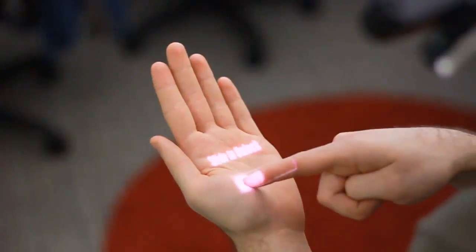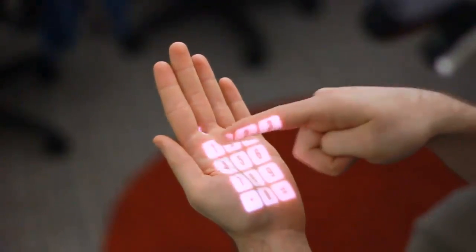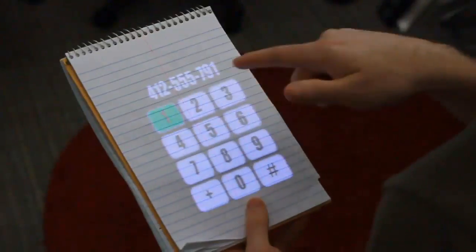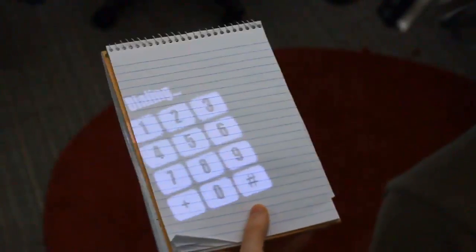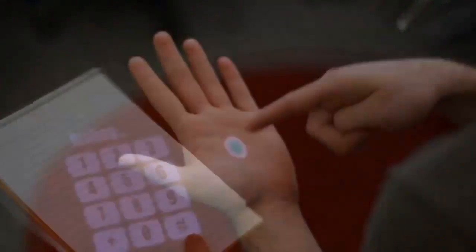Omni-Touch is a wearable system that enables graphical, interactive, multi-touch finger input on everyday surfaces. Our system allows wearers to interact with applications on their hands, arms, legs, books, walls, tables, and many other surfaces.